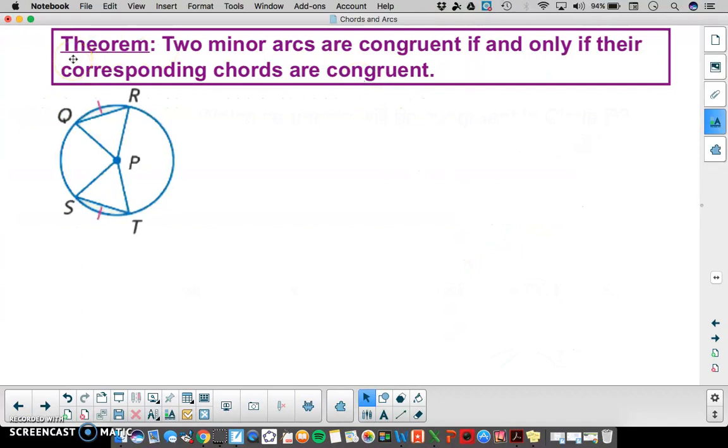Our first theorem is dealing with congruent arcs. If we have two minor arcs, they're going to be congruent if and only if their corresponding chords are congruent. So in this picture, we have arc QR is congruent to arc ST. Which segments will be congruent in this circle? According to this theorem, segment QR, which is chord QR, and chord ST would be congruent.